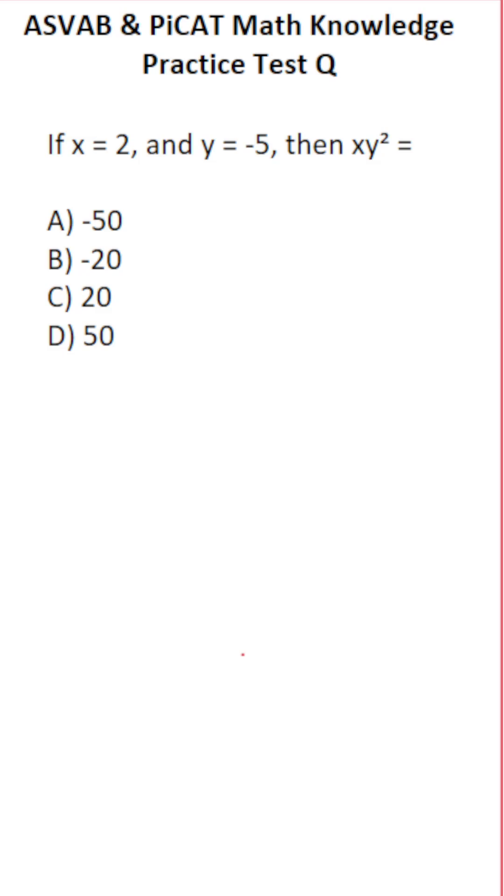This math knowledge practice test question for the ASVAB and PICAT says, if x equals 2 and y equals negative 5, then x times y squared equals.